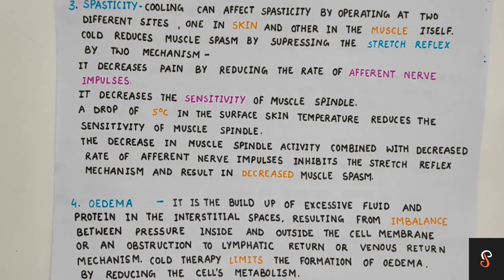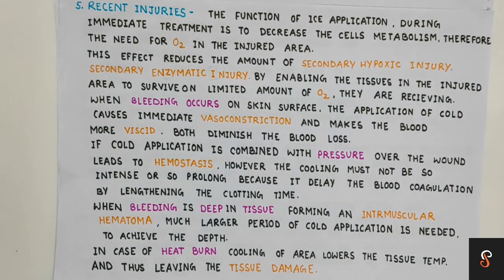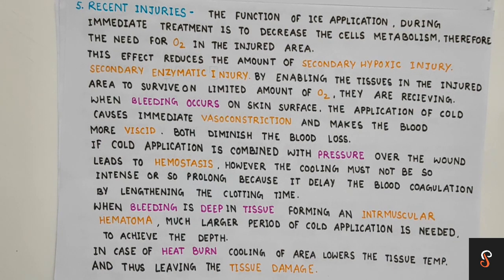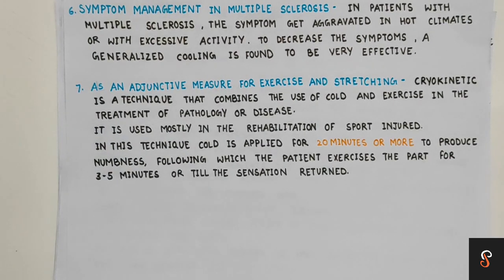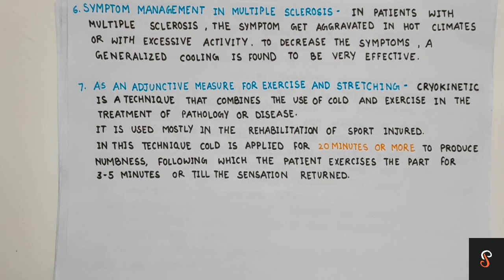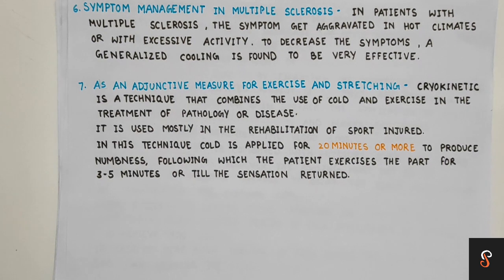Fifth is recent injury — in case of any injury, ice should be applied immediately, as it reduces cell metabolism and decreases the oxygen demand of the injured area. Application of cold at bleeding sites causes vasoconstriction and increases blood viscosity, thereby preventing blood loss. Cold can also be applied in case of heat burns to reduce tissue temperature and tissue damage. Sixth is symptom management in multiple sclerosis — localized hardening of skin is called sclerosis, and generalized cooling is very effective in this case. Seventh, as an adjunctive measure for exercise and stretching: cryokinetics is a technique that uses cold and exercise in the treatment of disease, mostly used in rehabilitation of sport injuries.